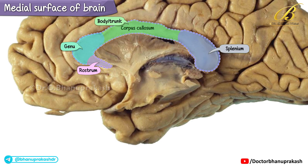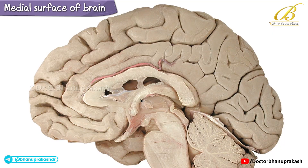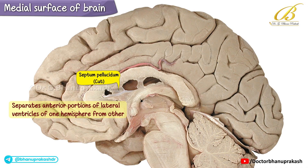Within each cerebral hemisphere lies a space brimming with cerebrospinal fluid, known as the lateral ventricle. We also observe the septum pellucidum, a membranous structure that separates the anterior portions of the lateral ventricles of one hemisphere from the other. This structure appears torn in our dissection, unveiling the lateral ventricle of one hemisphere behind it.